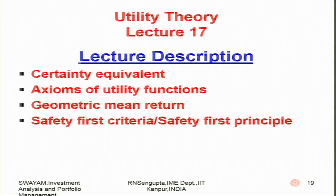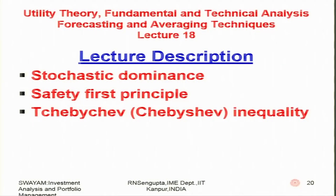Lecture 17, under utility theory, will cover certainty equivalents, the axioms of utility functions, geometric mean returns and how they can be used to rank portfolios. We will consider three or four different models under safety first criteria. In the last part of utility theory we will consider stochastic dominance, the safety first principle, and the safety first inequality. Lecture 18 will continue with fundamentals and technical analysis, forecasting, and averaging techniques for investment analysis.